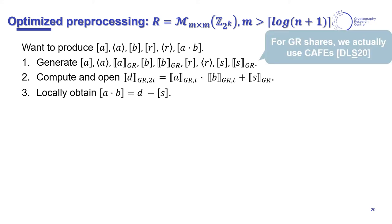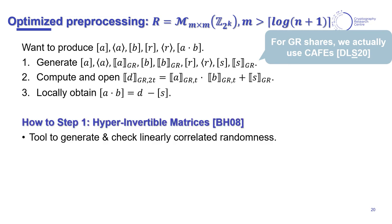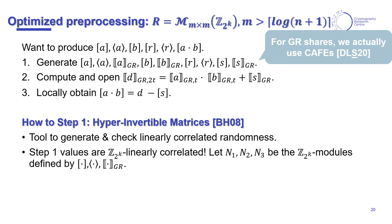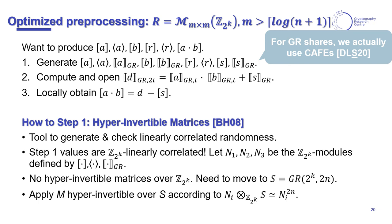In order to generate the correlated values from step one, we use hyperinvertible matrices, which are extremely powerful when the correlations that we want to produce are linearly correlated. The important question here is over which structure are these values linearly correlated. In this case, that's the integers modulo 2^k. So we can look at the secret sharing with the straight brackets, angle brackets, or double brackets as ℤ₂ᵏ modules. The problem is that we do not have hyperinvertible matrices in this ring, so we have to move to an extension in order to find them, and this was a similar issue in the previous works.